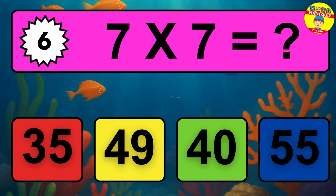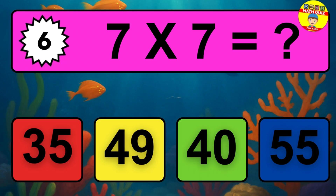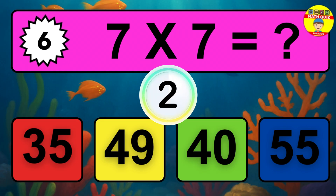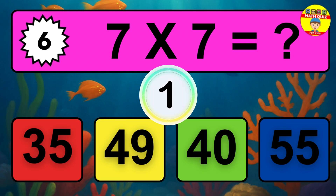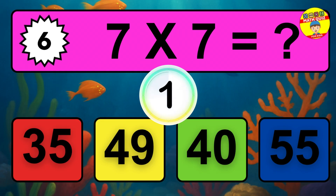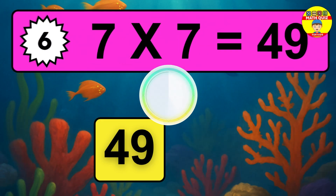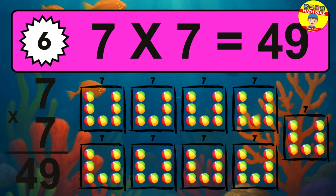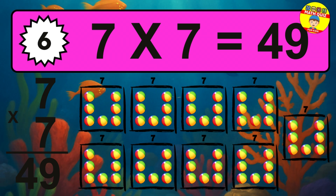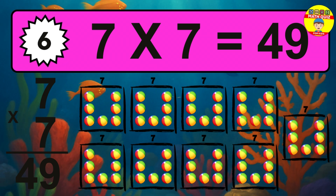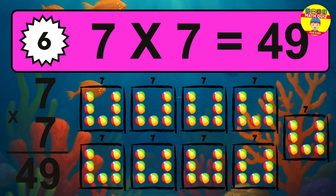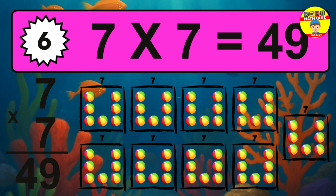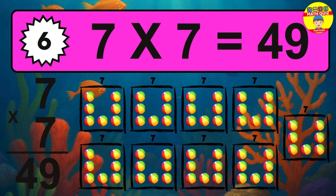Question 6. 7 times 7 equals what? The answer is 7 times 7 is 49. To calculate, we have 7 groups with 7 balls each one. So, how many balls do we have? 49 balls.